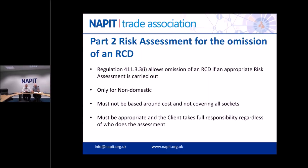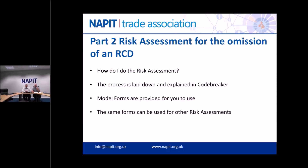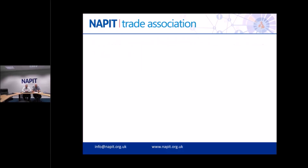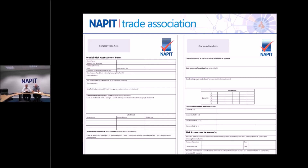For an inspector doing a condition report and finding a socket outlet without RCD, you've got to decide on coding based on the risk assessment. The first question to the duty holder is: is there a risk assessment in place? If yes, you can give appropriate codes. If not, you need to look at how to have them complete the risk assessment. The Code Breaker has all this laid down with sound advice, and we've also provided model forms for you to use for these and other risk assessments.